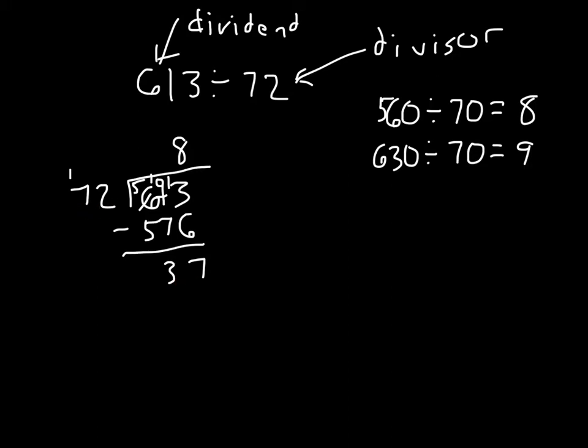And it looks like we get our remainder, which is 37. 37 is less than 72. In other words, I cannot make another group of 72. So that is our remainder. 8 with a remainder of 37.